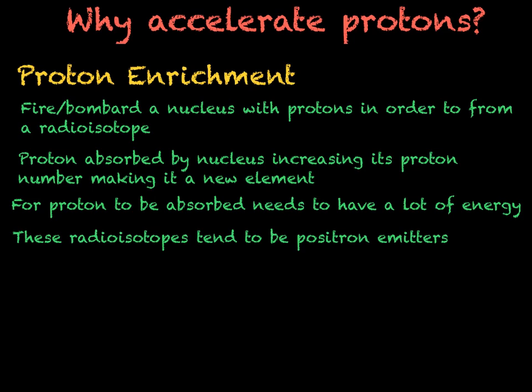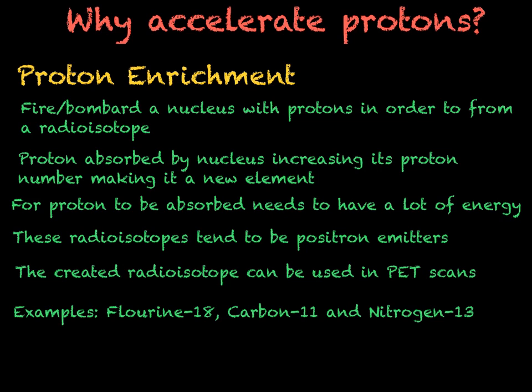The radioisotopes made via proton enrichment tend to be positron emitters. If you remember back to the previous video, we looked at positron emitters and what the positron was. But as a reminder, it is the antiparticle of the electron. It is an electron with a positive charge. These are particularly useful in hospitals, where we can use them in PET scans, as we looked at in the past videos, to monitor blood flow and metabolism. However, the isotopes that we make have a very short half-life so that the radiation is minimised. Examples of positron emitters include fluorine-18, which is used in PET scans, carbon-11, and nitrogen-13. We will now quickly refresh these decay equations.